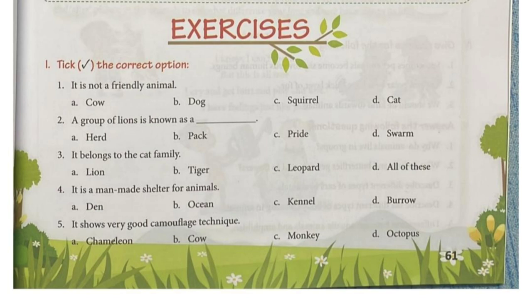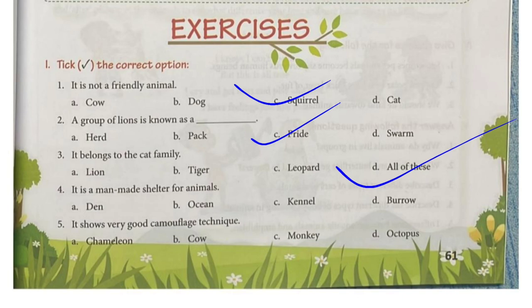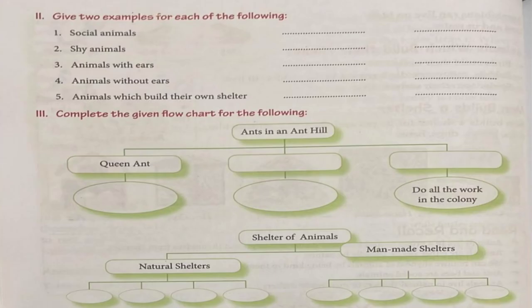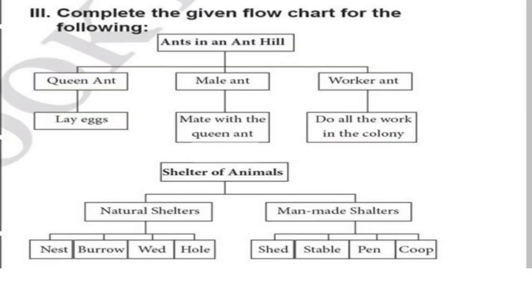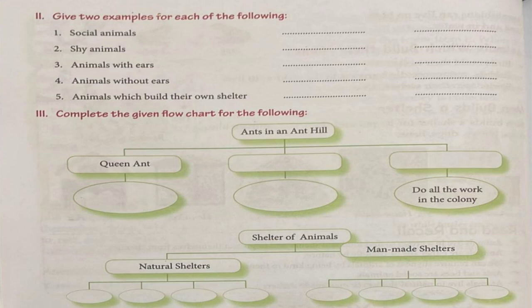Review questions: squirrel is not a friendly animal — it is very shy. A group of lions is known as a pride, and lions belong to the cat family along with tigers and leopards. A kennel is a man-made shelter for animals. The animal that shows very good camouflage technique — blending in with leaves — is the chameleon.